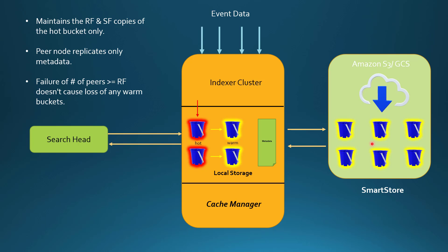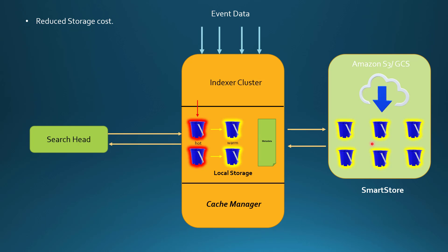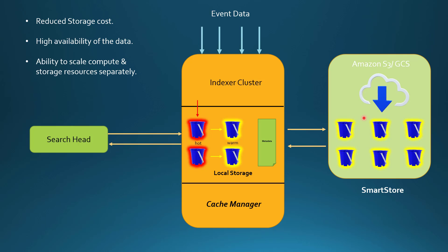This is how the whole Splunk Smart Store architecture looks. Briefly, the advantages are: reduced storage cost; high availability of data — though that depends fully on the remote storage solution you use; and the ability to scale storage and compute separately, giving you full control. You can configure this at the index level and slowly migrate all your indexes.